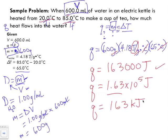Therefore, how much heat flows into the water? Well, 163 kilojoules or 1.63 times 10 to the power of 5 joules of heat flows into the water.